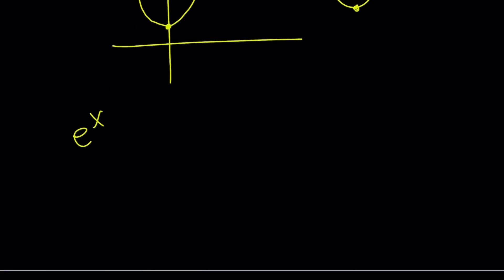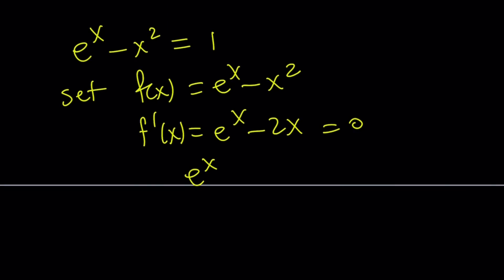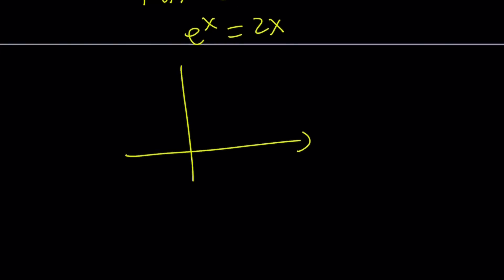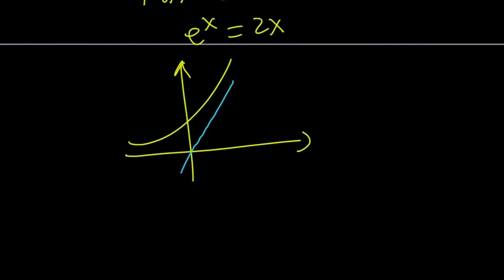Let's look at it from the original equation: e to the x minus x squared equals 1. I'm going to set f of x equal to e to the x minus x squared. Now, if you differentiate this, you get e to the x minus 2x. If you set it equal to 0 to find the critical points, you get e to the x equals 2x. But unfortunately, this equation has no real solutions. Because, if you look at it graphically, e to the x is exponential and 2x is a linear function with a slope of 2 — they're not going to intersect. So in other words, these two functions do not intersect.